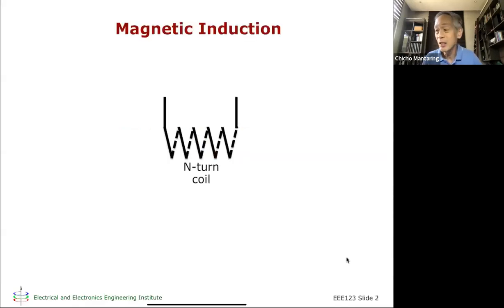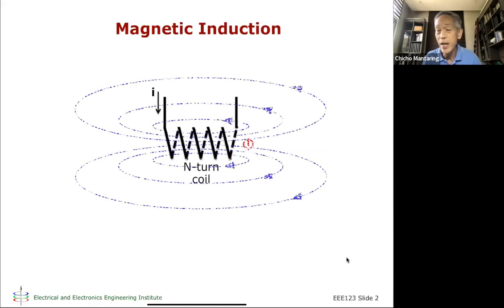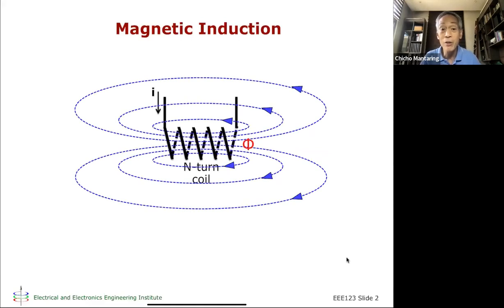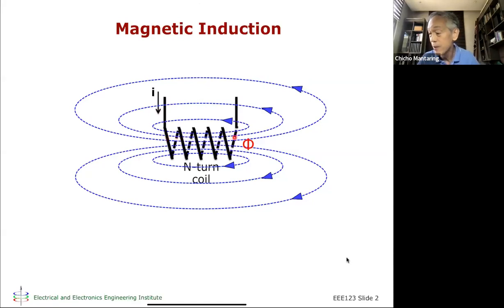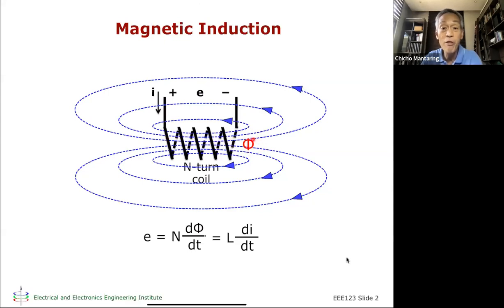If you recall when we took up inductance, inductance is essentially a winding. If you make a current pass through this winding, there's going to be a magnetic field that will develop around the winding. The magnetic field will be concentrated in the area of the axis of the winding, and then it will go out into the atmosphere and then come back in. But most of the magnetic field will be here in the axis.